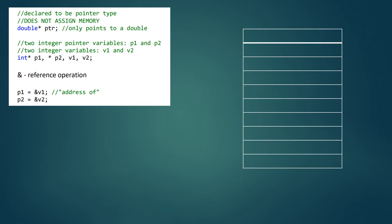So when we declare a pointer, like double *PTR declared here, what happens is we get a pointer called PTR that's ready to point to a double. This is a memory map. But it actually doesn't point anywhere, so it is really of no use to us. You need to have it point somewhere, or as we will learn soon, you can use the new operator to get memory. At this point, we're just going to have a pointer that's declared to be a double pointer. It can only point to a double, but it doesn't point anywhere at this time.